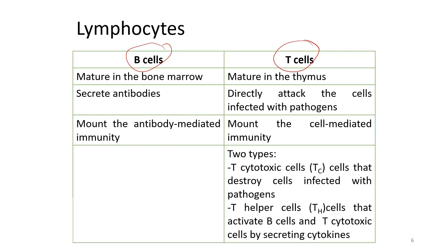Based on this table, we know that B cells mature in bone marrow. However, T cells mature in the thymus gland.